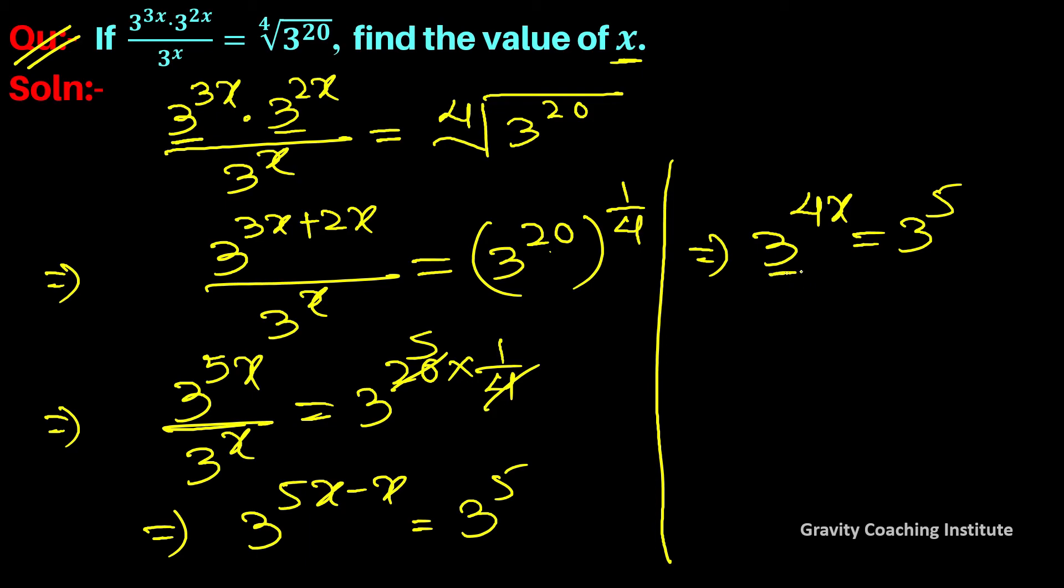Now we compare: both bases are identical, so the powers are equal. 4x equal to 5, therefore x equal to 5 upon 4.